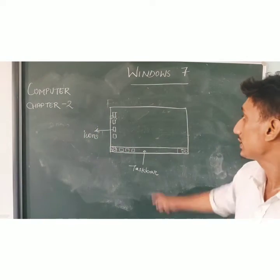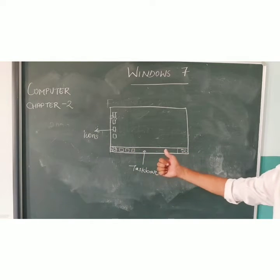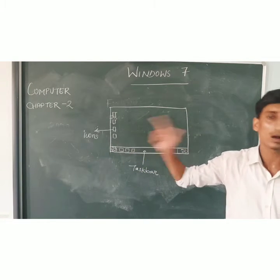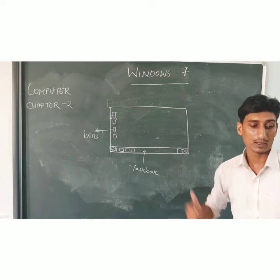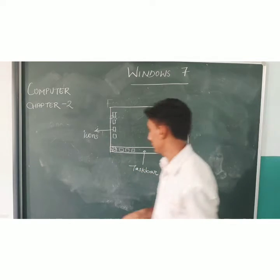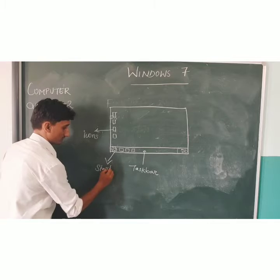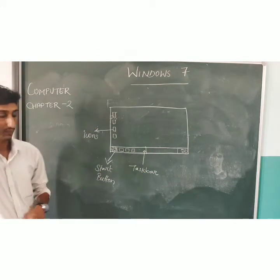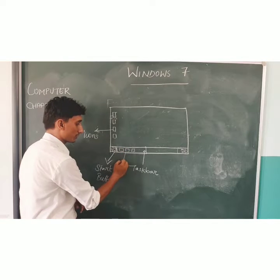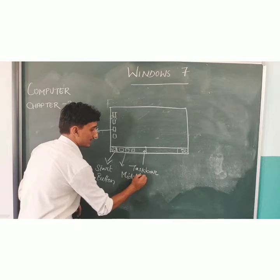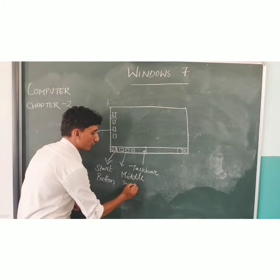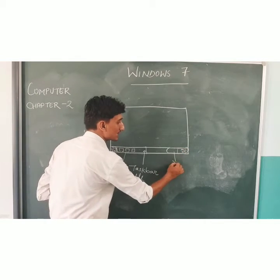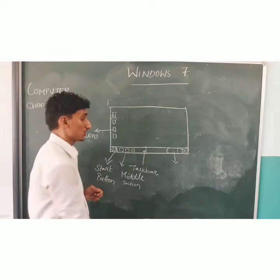This is the taskbar. On the taskbar, the first button is known as the start button. Different icons on the desktop include My Computer, Control Panel, and My Network area. The middle section of the taskbar shows open files and folders. The third part of the taskbar is known as the notification area.